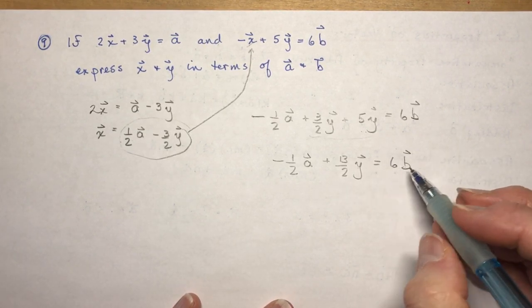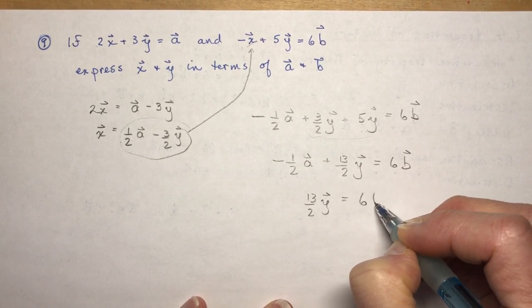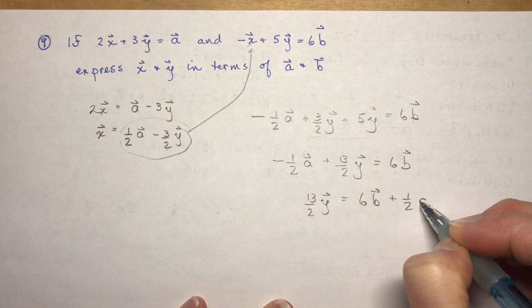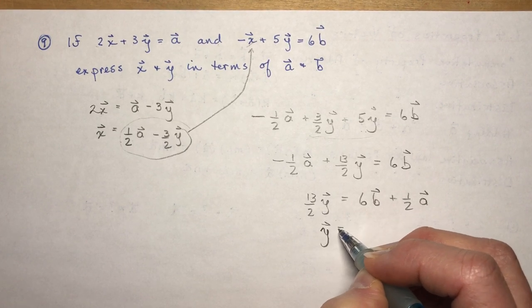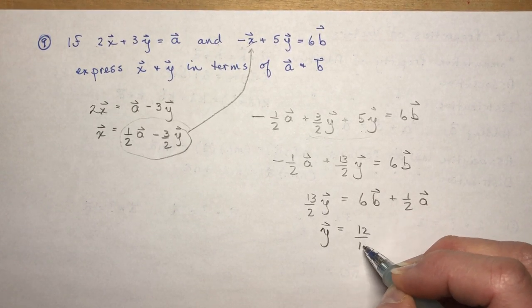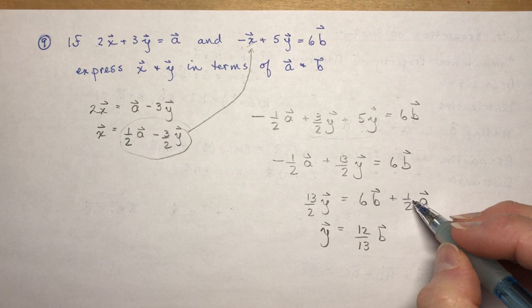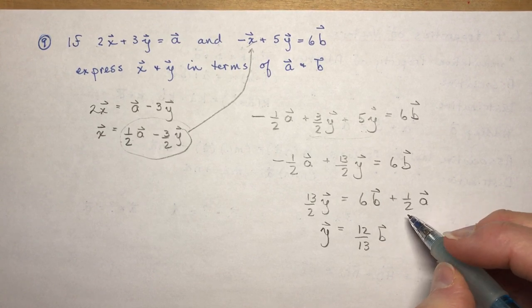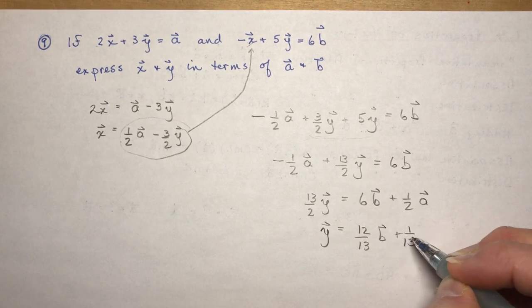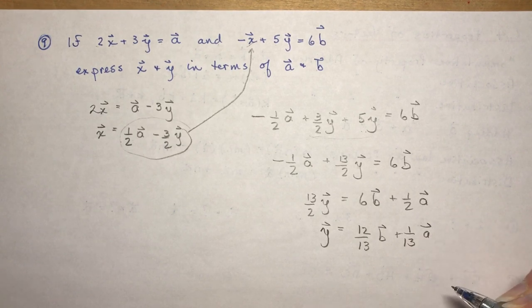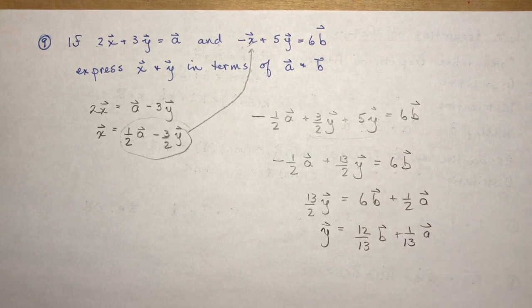This is just basic algebra. I multiply by 2/13 to get 1y, so that's 12/13 vector b's. If I multiply this by 2/13, I would divide the 2's out and I would have 1/13 vector a plus 1/13 vector a. So we did 12/13 vector b's.